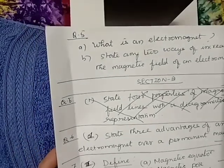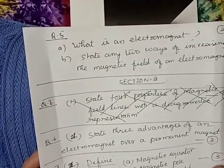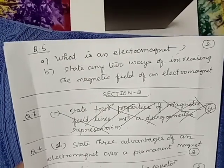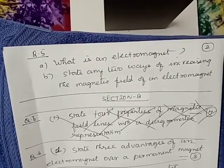Question number 5: What is an electromagnet? State any two ways of increasing the magnetic field of an electromagnet. Allotment: 2 marks.